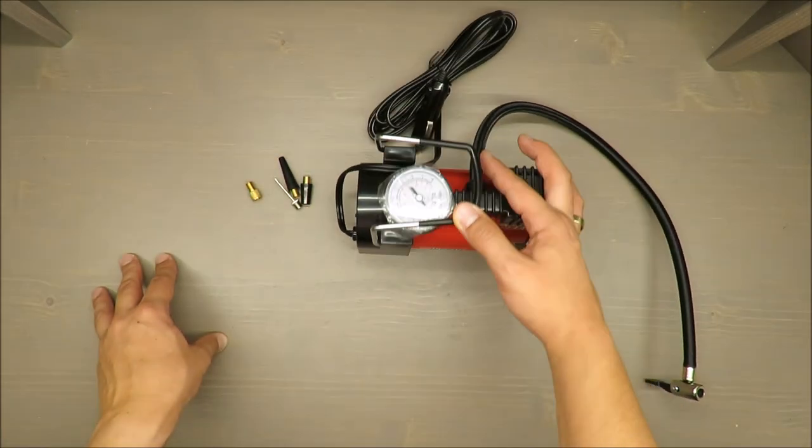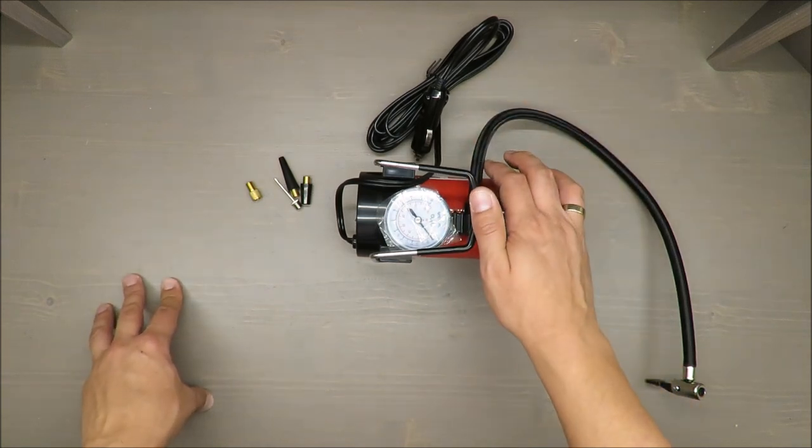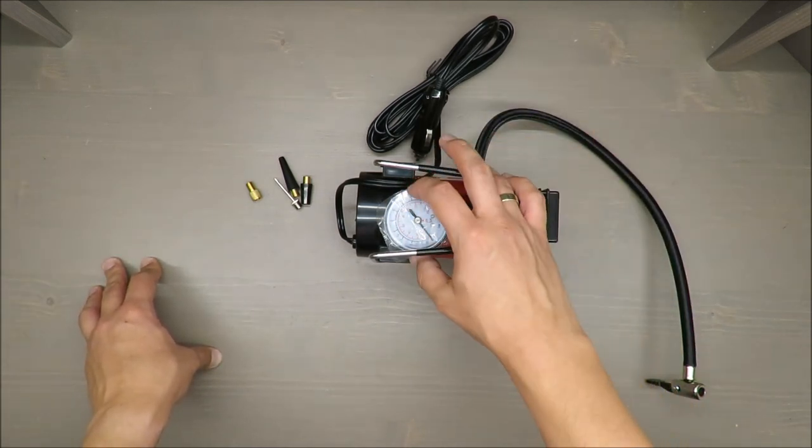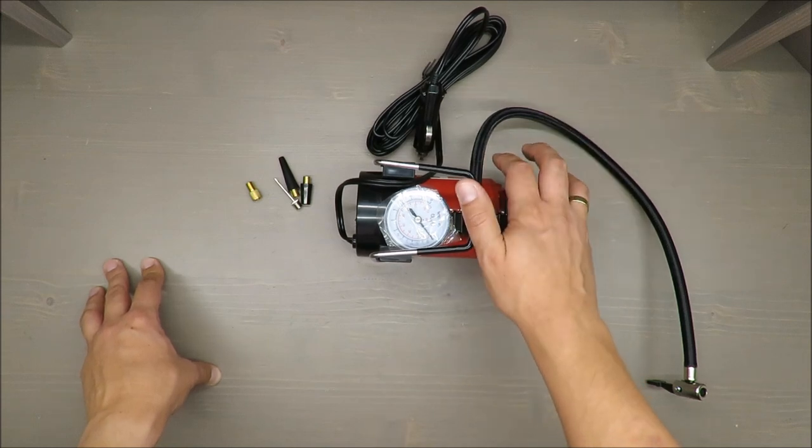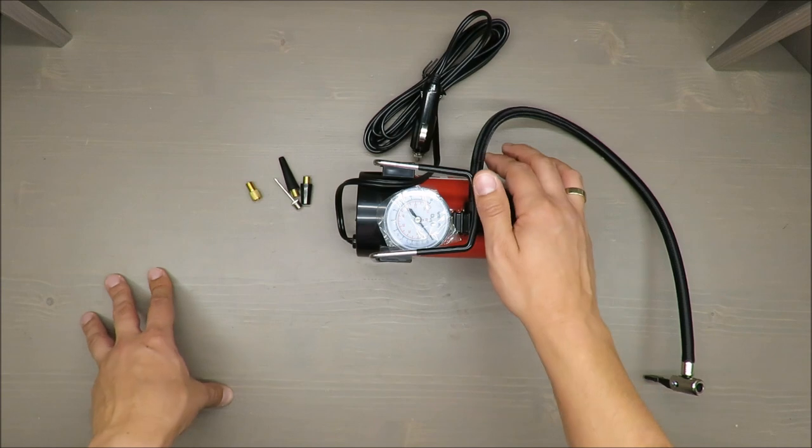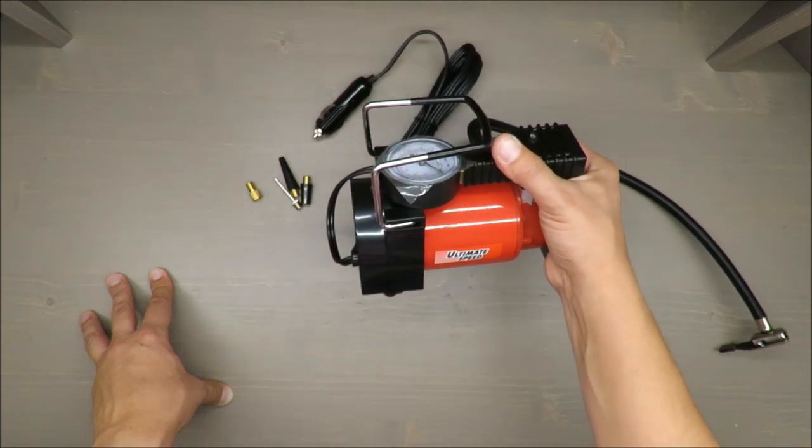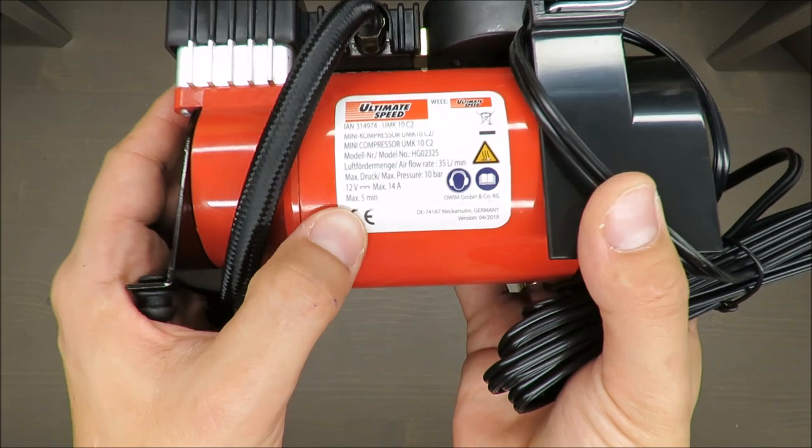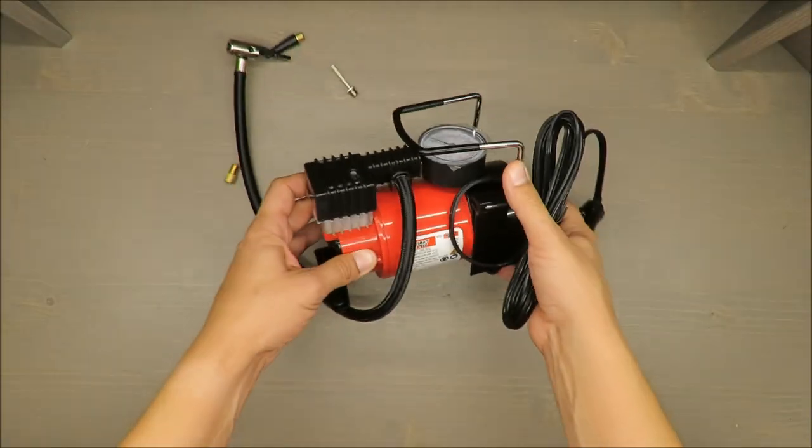Features of this device: operating pressure is maximum 10 bars, so for car tires more than enough. You have four adapters and a pressure meter. Maximum air capacity is 35 liters per minute, cable is three meters which is okay, you can reach each tire easily. Weight is 1.64 kilograms. The operation time is maximum five minutes, so if you multiply five minutes by 35 liters per minute you've got efficiency.